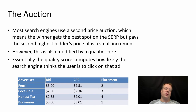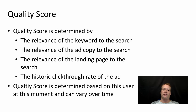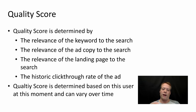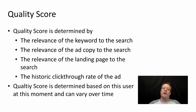That all assumes quality scores are equal. What determines the quality score? It's determined by a few things: the relevance of the keyword to the search — how relevant is the word you bid on to what the user typed; the relevance of the ad copy to the search, where Google looks at the text you wrote and sees how similar it is; the relevance of the landing page; and the historical click-through rate on the ad. If people aren't clicking on the ad, Google will downgrade it because unless people click, Google gets no money. Importantly, the quality score is determined based on the user at that moment and can vary over time — a different user at a different time might receive a different quality score for the same ad.